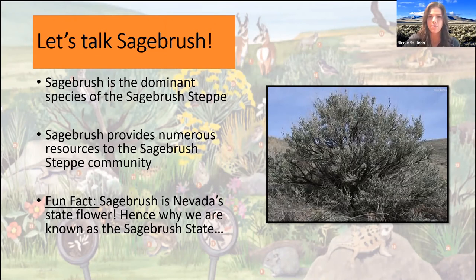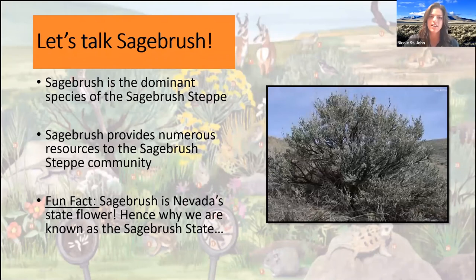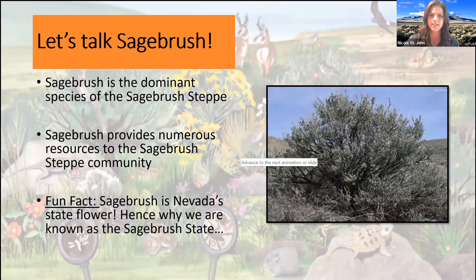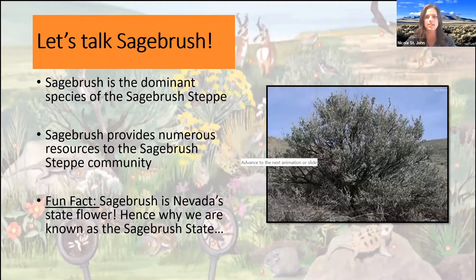I have another poll question for you guys. This poll question pertains to sagebrush — sagebrush has that unmistakable scent, right? You smell it, you know exactly what it's coming from. Where do we think that scent comes from? Looks like about 75% of us voted, and a majority of you guys voted 'leaves,' which is correct. That aromatic smell comes from the leaves of the sagebrush. It actually produces a volatile oil in the leaves and it's a defense mechanism against some herbivores — a way for the plant to protect itself.